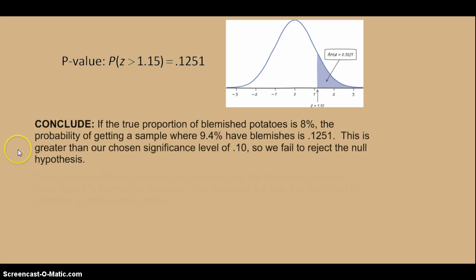So here's our conclusion. If the true proportion of blemished potatoes is 8%, the probability of getting a sample where 9.4% have blemishes is 0.1251. This is greater than our chosen significance level of 10%, so we fail to reject the null hypothesis. We do not have evidence to accept the alternate hypothesis.